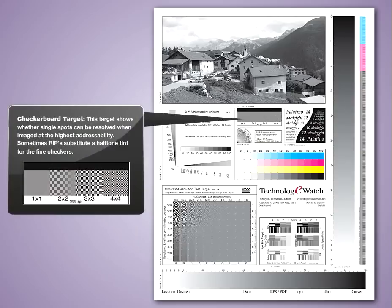Checkerboard target. This target shows whether single spots can be resolved when imaged at the highest addressability. Sometimes RIPs substitute a halftone tint for the fine checkers.